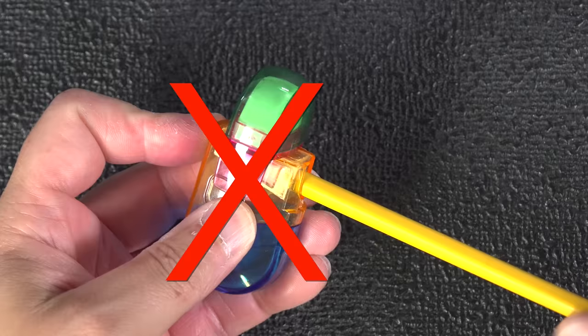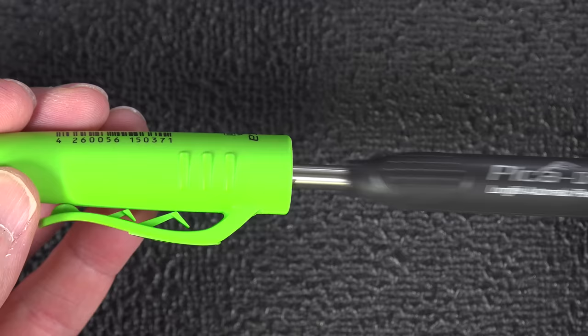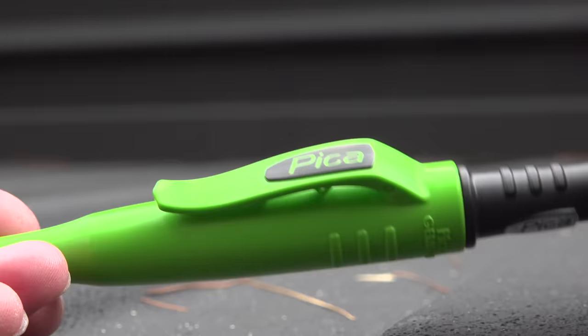Professionals have been using these for years because they do a better job, they last a lot longer, and they can write on almost any surface. And this is the PikaDry Mechanical Pencil that's made in Germany. But this pencil is nothing like any one that you've ever used.